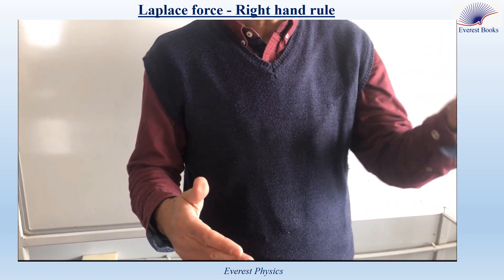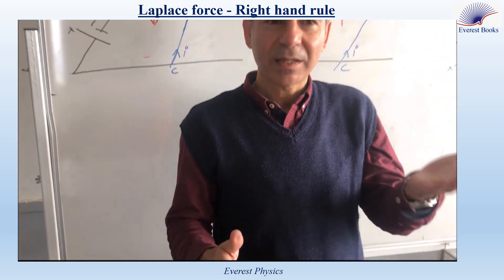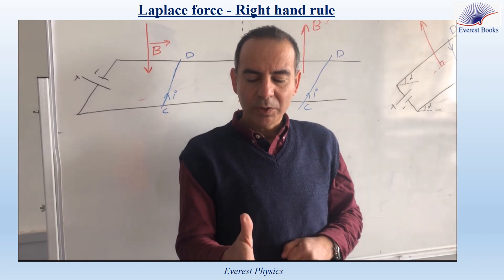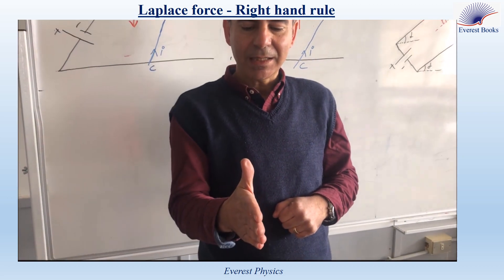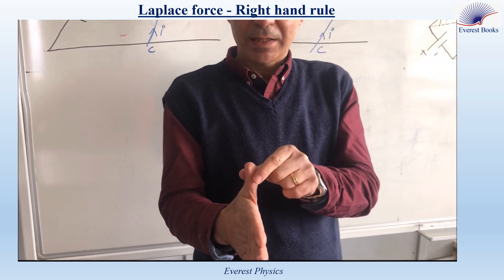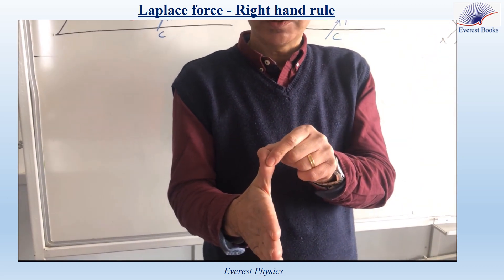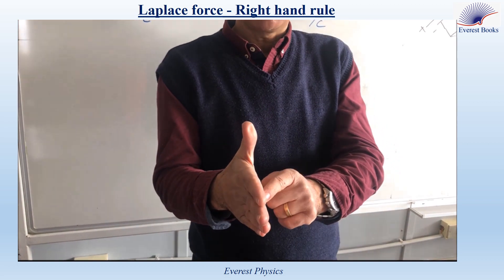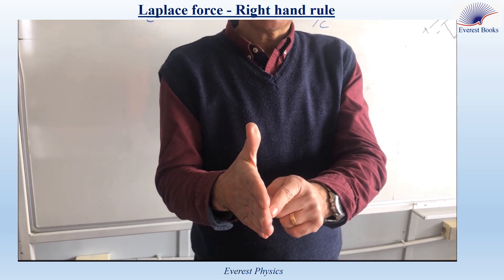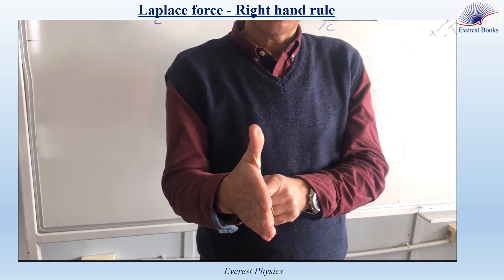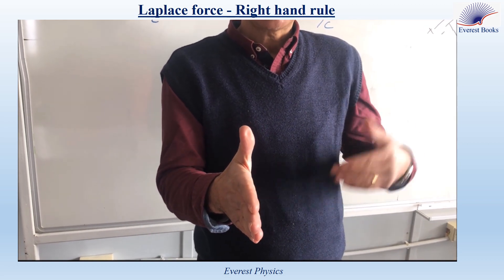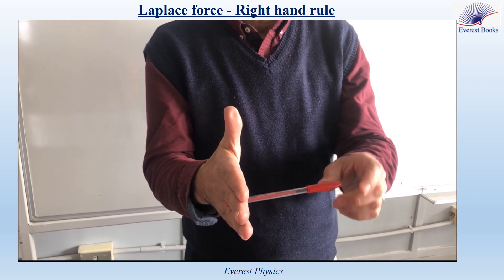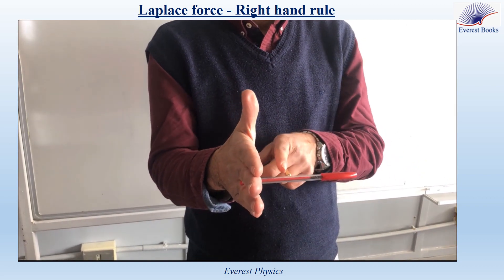We also have another method using the right hand to determine the direction of this force. We use the right hand as shown: the thumb points in the sense of the current, the other fingers point in the direction of the magnetic field, and the Laplace force is directed away from the palm of the hand.